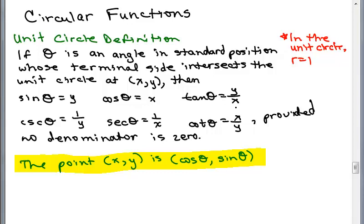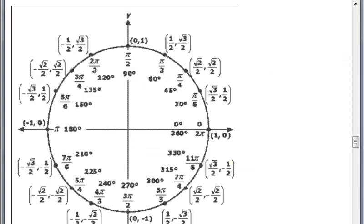So the interesting thing is that x is the cosine of that angle and y is the sine of that angle. So that ordered pair (x, y) could be thought of as (cosine of theta, sine of theta). This diagram shows for all of the special angles what the ordered pairs on the unit circle are.